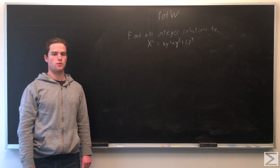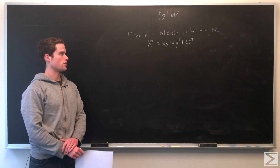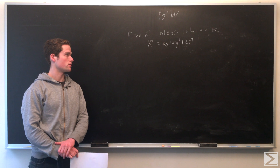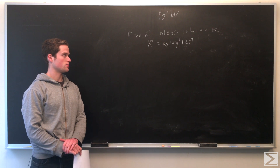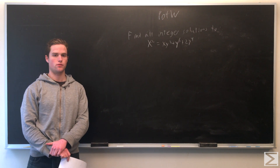Welcome to Center of Maths Problem of the Week. This week's problem: we want to find all the integer solutions to x squared equals x times y squared plus y to the sixth plus 2y to the fourth.